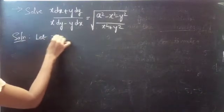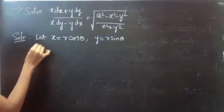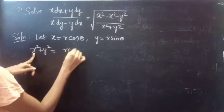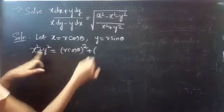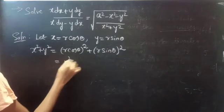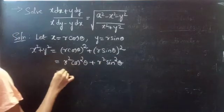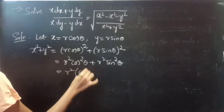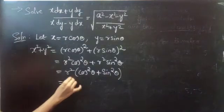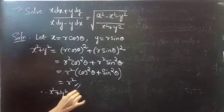Let x = r cosθ and y = r sinθ. Then x² + y² = (r cosθ)² + (r sinθ)² = r² cos²θ + r² sin²θ = r²(cos²θ + sin²θ). Since sin²θ + cos²θ = 1, we get x² + y² = r².